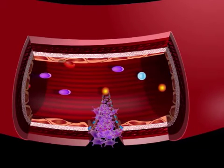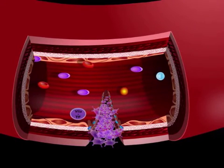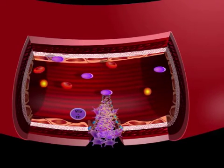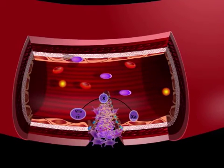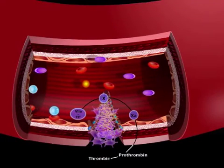Following damage to a blood vessel, factor VII comes into contact with tissue factor, forming the tissue factor factor VIIa complex. This complex activates factor X to form factor Xa, which converts prothrombin, or factor II, into thrombin, also known as factor IIa.